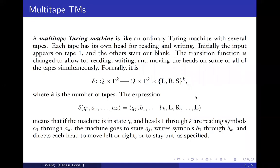The formal definition of a multi-tape Turing machine: it is like an ordinary Turing machine with several tapes, each with its own head for reading and writing. Initially the input appears on tape one, which can serve as both input and output tape. The other tapes start out blank as working tapes. The transition function is changed to allow reading, writing, and moving the heads on some or all of the tapes simultaneously.